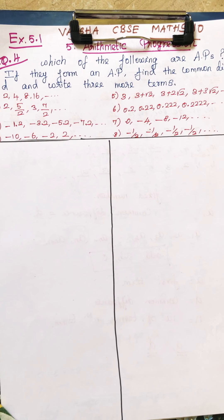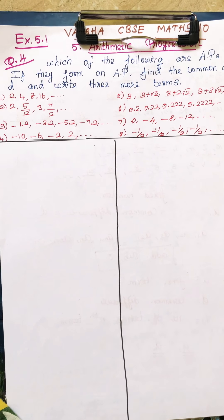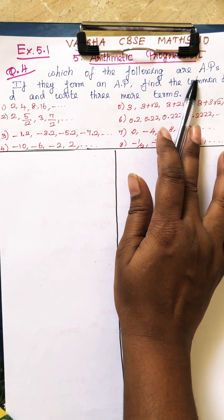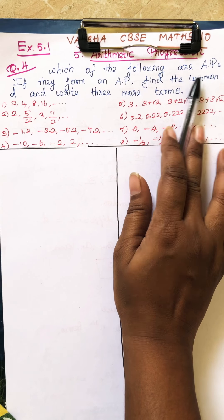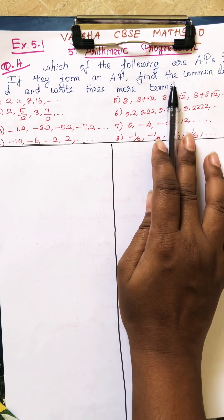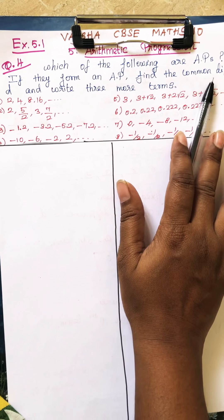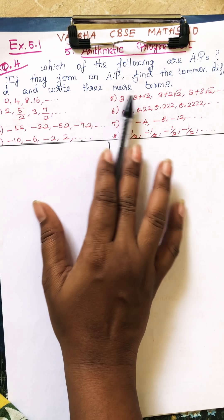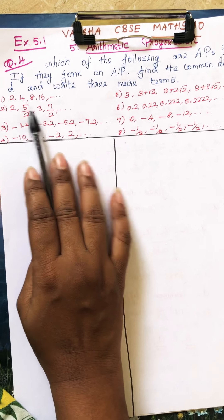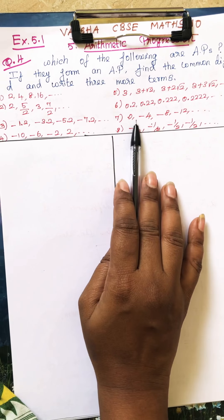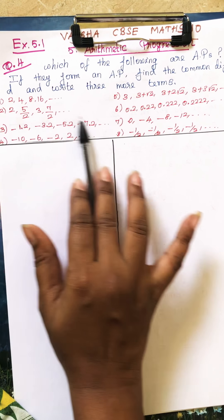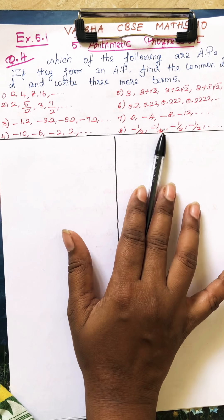In this exercise we are going to do the 4th sum: which of the followings are Arithmetic Progressions, and if they form an AP, find the common difference D and write 3 more terms. You have been given 15 questions, and I have written 8 questions here.